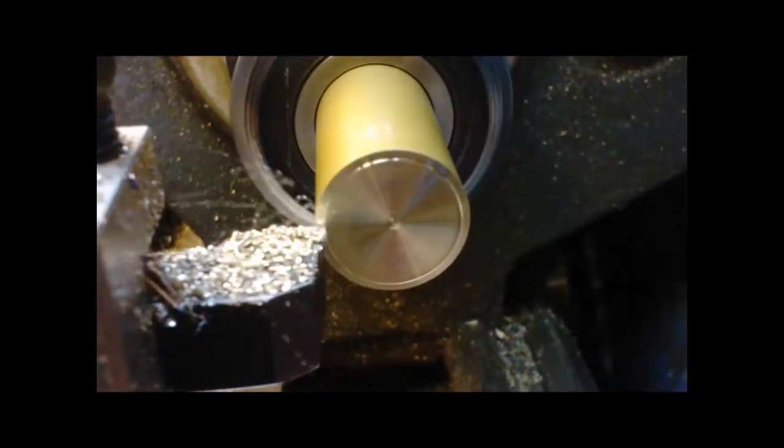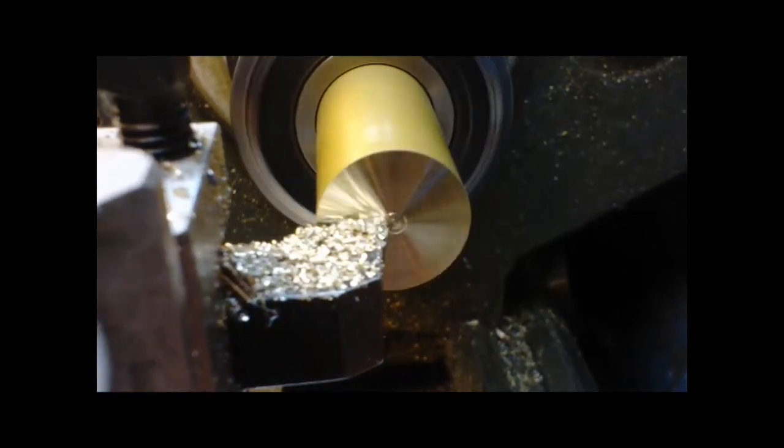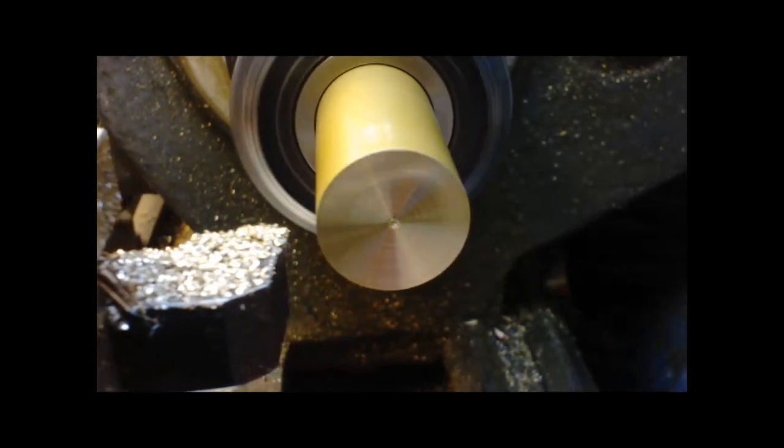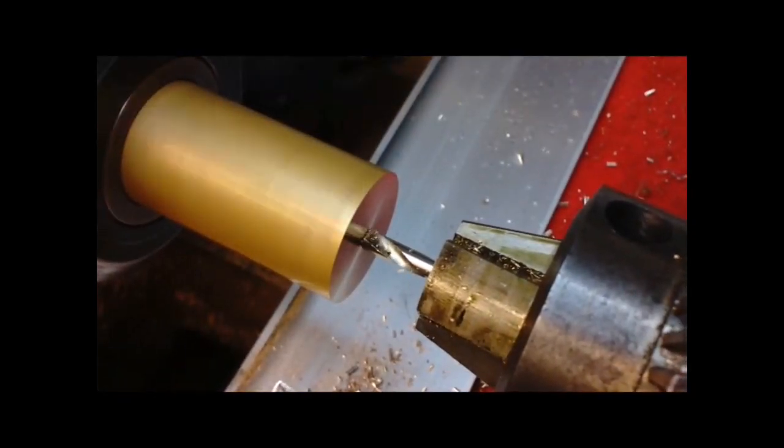We started off with a suitable piece of bar stock, cut some off and then phased up the end. It was then drilled slightly under size and then reamed to fit the arbor.